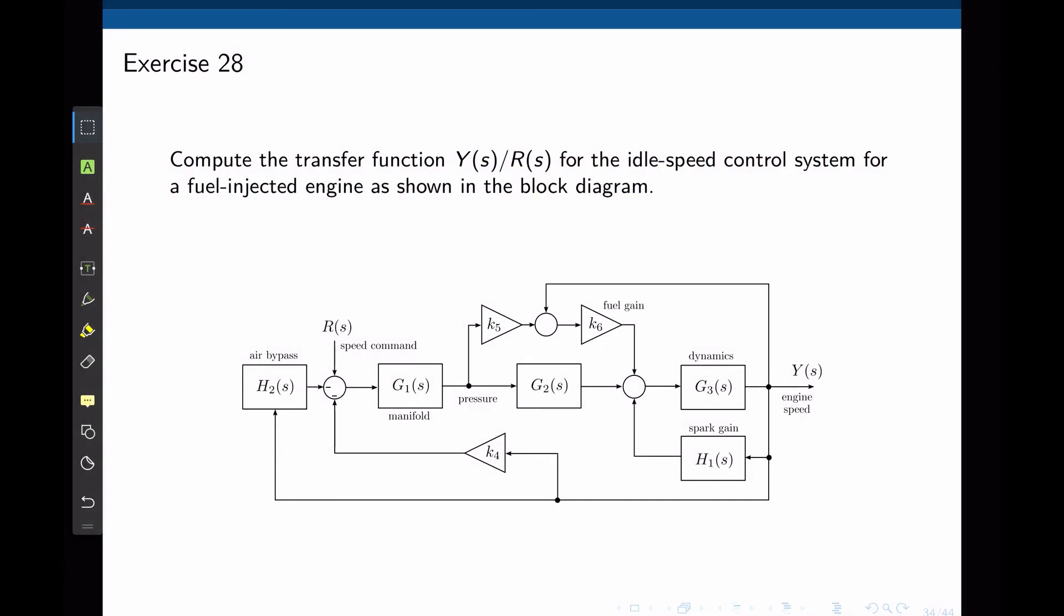In this example, we are interested in the transfer function between the input R and output Y. This block diagram is fairly complicated to simplify. Let's start by identifying blocks that can be simplified without any further manipulation. We can see that G3 and H1 can be simplified, and K4 and H2 can also be combined. The difficulty may be the fact that we have sums with three inputs, but those are equivalent to two sums, each having two inputs.